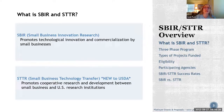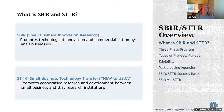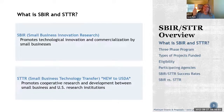So what is SBIR and STTR? Both programs are designed to commercialize a technical innovation that has high risk. The key difference is that the STTR requires U.S. research institution involvement, while the SBIR does not require it — you can have research institution involvement, but you are not required to. That's the basic difference, and I'll discuss it in more detail in a later slide.